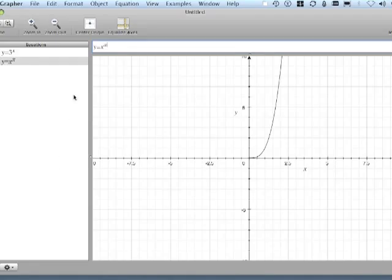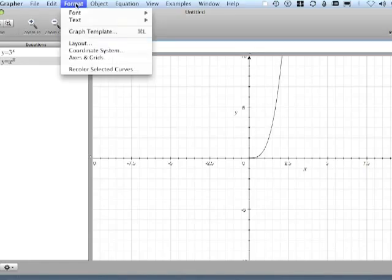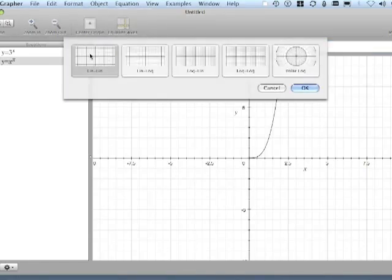If this is truly a power function, when we graph the log of the x's and the log of the y's, we'll get a straight line. To do that, we'll take Format, Coordinate System, and select Log Log.